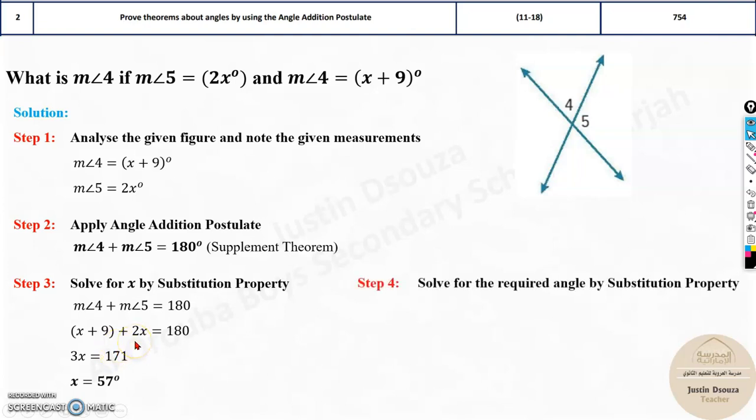Now, is it over? No, they asked us to find measure of angle 4. We found the x value. Now, substitute x over here and solve. You will get x plus 9. That is 57 plus 9. 66 is your final answer. 66 degrees.